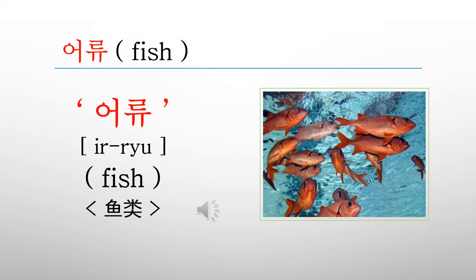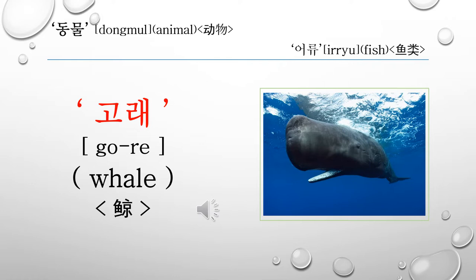Let's see the Korean word for fish. The first word is 고래. 고래 is called a whale in English and it is called 精 in Chinese. The whale is not a kind of fish — it is one of the mammals.